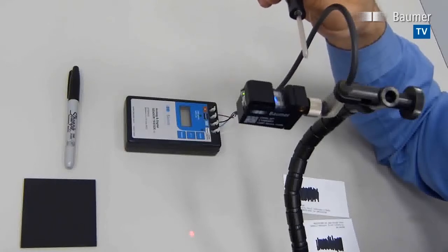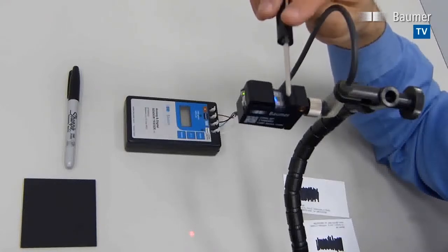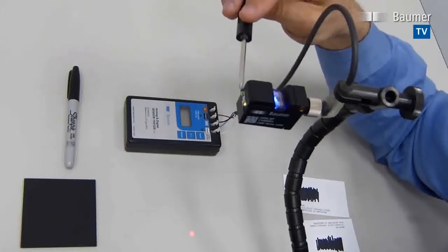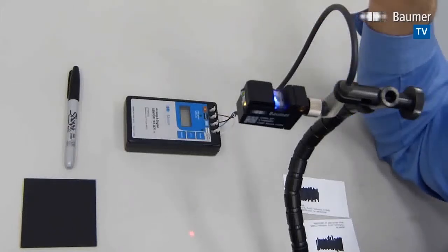To teach the sensor, we put it into the first of three levels of teaching that we'll discuss in a second. Let's enter level 1 teach mode. We do that by holding the tool and waiting for the sensor to flash once per second.